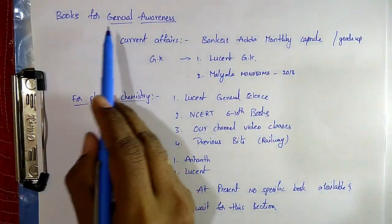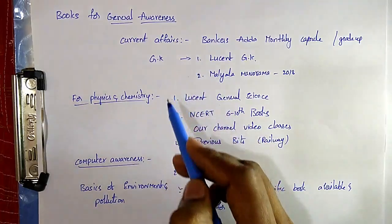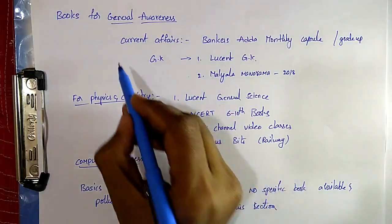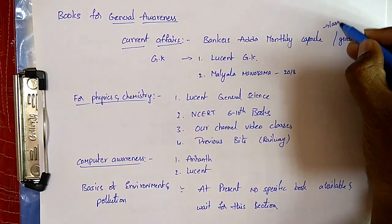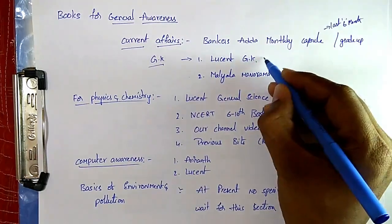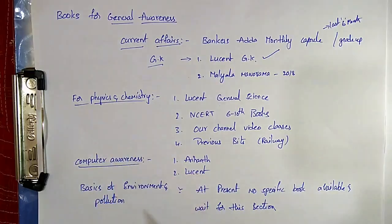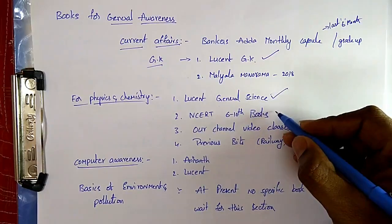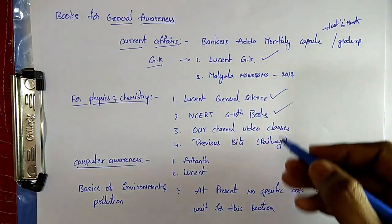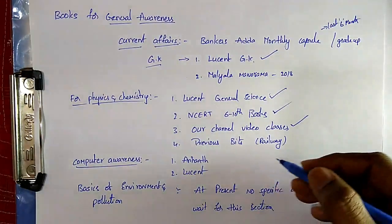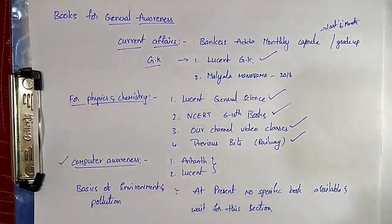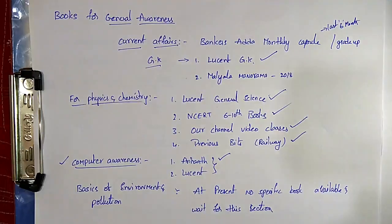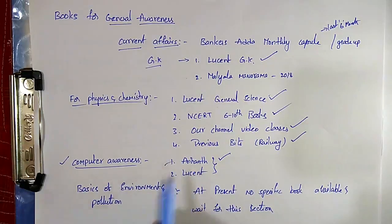Coming to the next sections — general awareness and physics and chemistry. These are also covered in CBT-1, which I have already discussed in the CBT-1 strategy. For current affairs, follow Bankers Adda monthly capsules or GradeUp for the last six months. For GK, Lucent GK is the best. For physics and chemistry, Lucent General Science is the best. You can also download NCERT Class 9 and 10 books — these are also useful. Follow our channel video classes and practice previous bits. For computer awareness, Arihant and Lucent are the important books — Arihant is recommended as it has better concepts and previous bits.